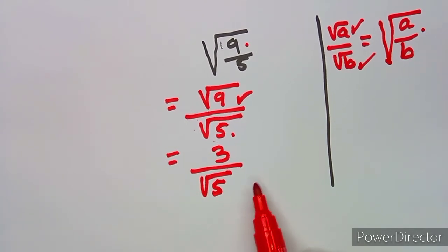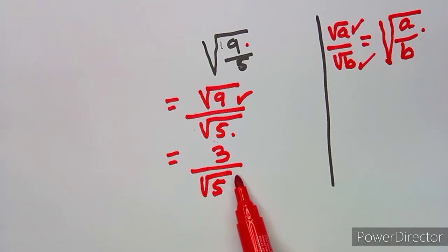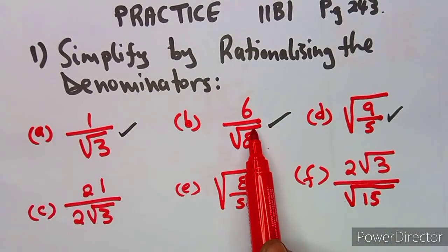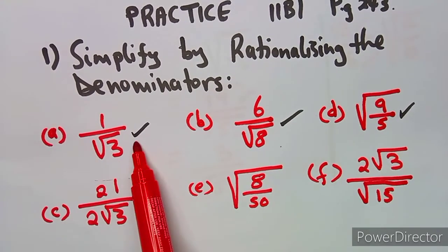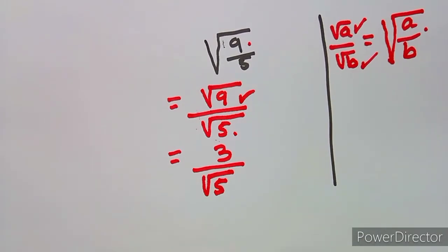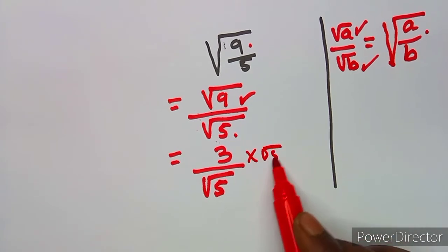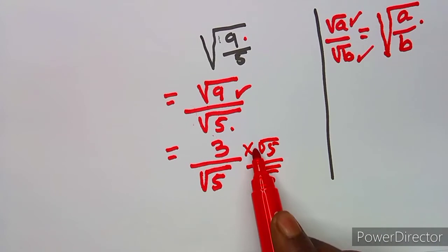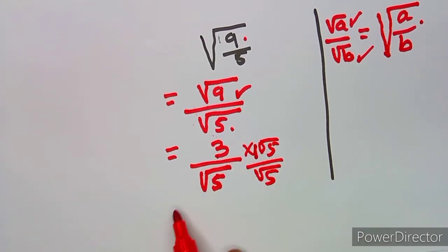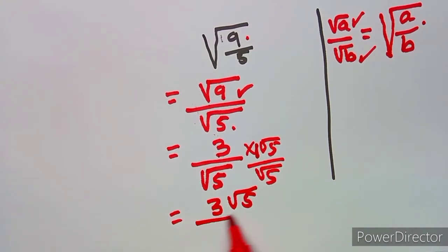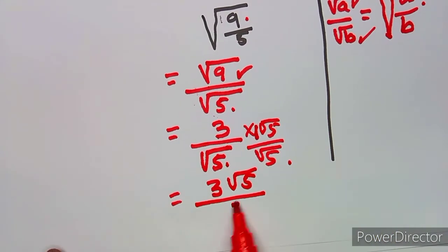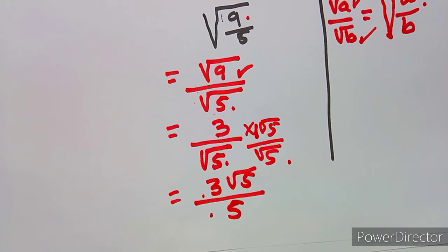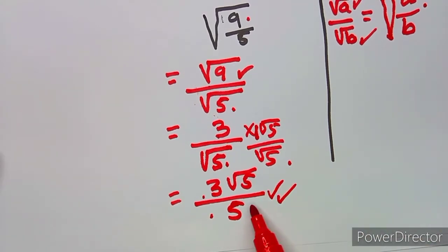We are now back to rationalizing the denominator, because the denominator is carrying a surd. This is now the same thing as the examples on B or A — it is the same thing. So we can rationalize by multiplying by square root of five over square root of five. Multiplying by this is the same as multiplying by one, so three times one is three. We get three square root of five over square root of five times square root of five, which gives us five. These two cannot cancel with three and five — your answer is three square root of five over five, and your denominator is now a rational number.